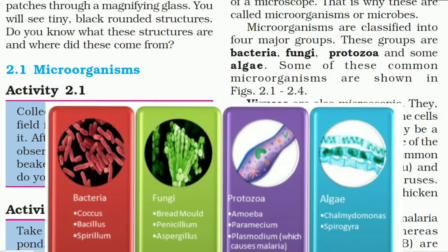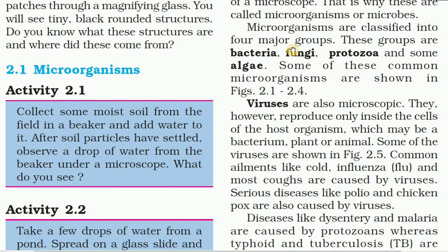Microorganisms are classified mainly into four major groups: one is bacteria, then fungi, protozoa, and algae. For bacteria, some examples are cocci and bacillus. For fungi, bread mold and penicillium are called fungi. Protozoa means amoeba, paramecium, and plasmodium are examples. And for algae, spirogyra and chlamydomonas are examples.